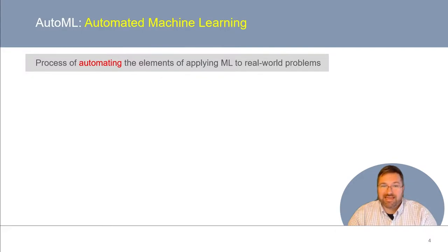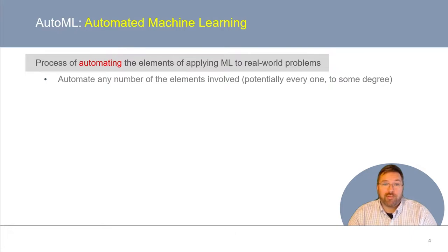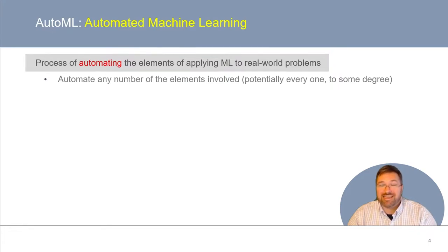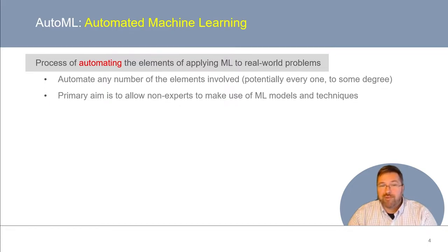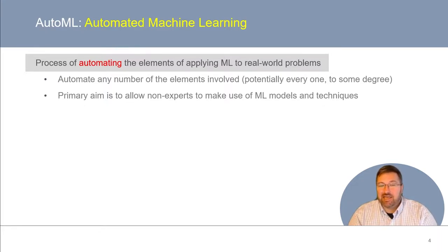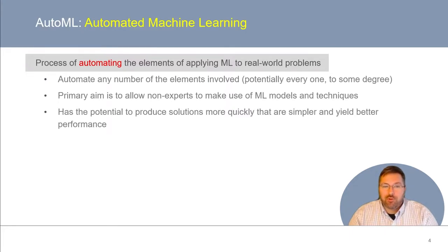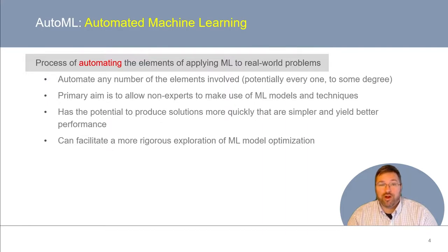AutoML is the process of automating the elements of applying machine learning to real-world problems. It can involve automating any number of the elements involved, and perhaps one day, as the field of artificial intelligence advances, maybe every single element, at least to some degree. Thus far, the primary aim of AutoML tools has been to make it easier for non-machine learning experts to make use of machine learning models and techniques in a more accessible and rigorous manner. Furthermore, AutoML has the potential to produce solutions more quickly that are simpler and yield better performance, and can facilitate a more rigorous exploration of model optimization.